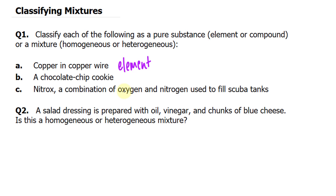In question number two, a salad dressing is prepared with oil, vinegar, and chunks of blue cheese. Is this a homogeneous or heterogeneous mixture? Each of these components has a different state — oil is a fluid, so is vinegar, and cheese is a solid. They're not all in the same state, and you can visibly see the components when you look at the salad. So this is a heterogeneous mixture.